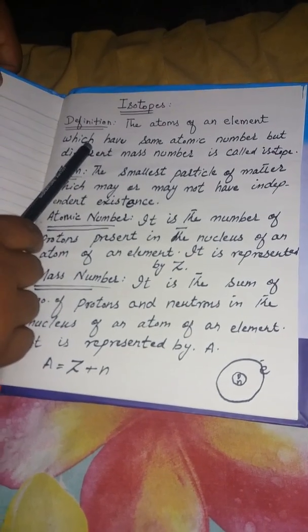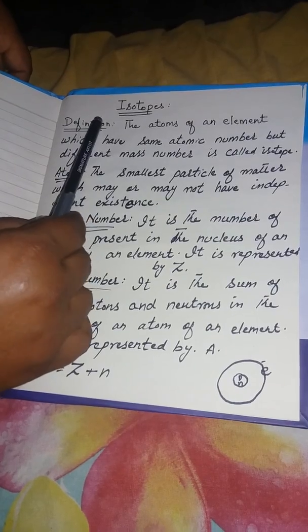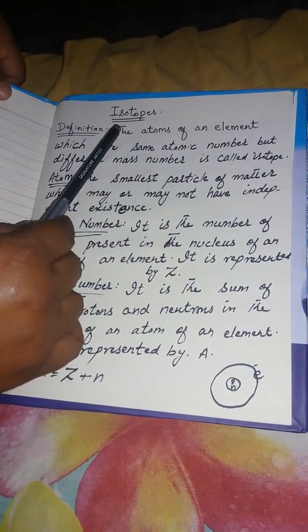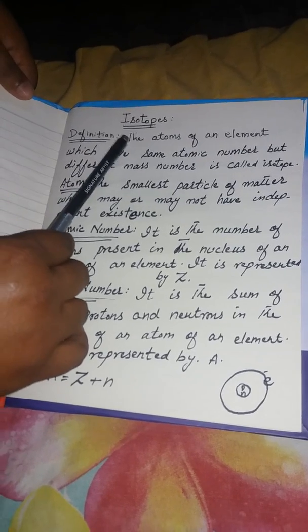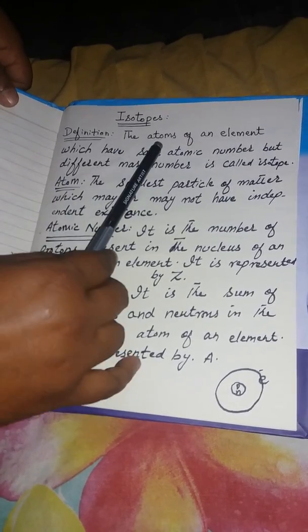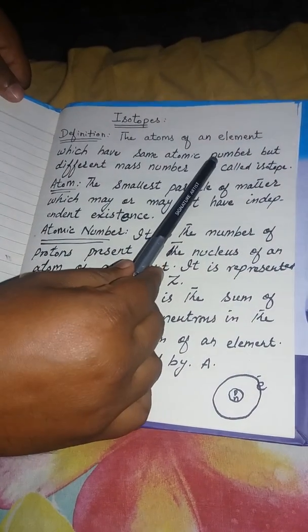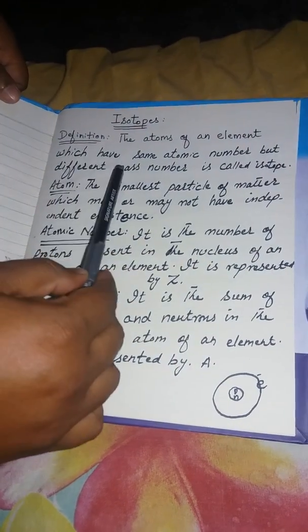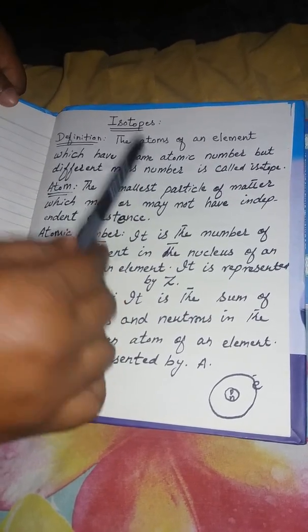Dear students, today we will discuss the topic isotopes. First of all, I will define isotopes. Isotopes are defined as the atoms of an element which have same atomic number but different mass number.